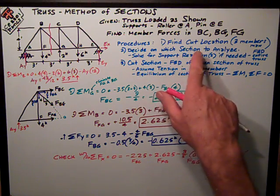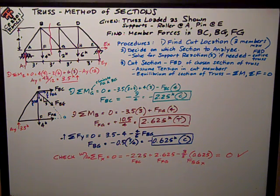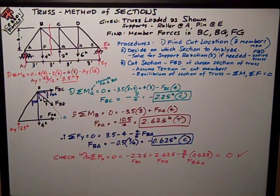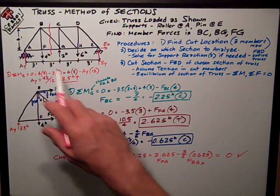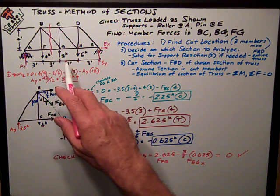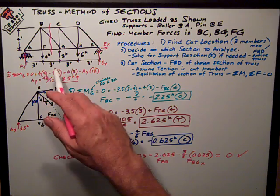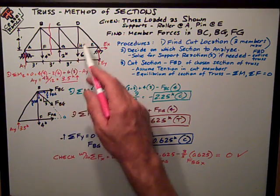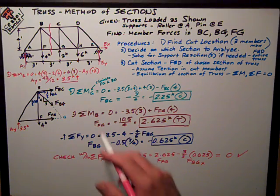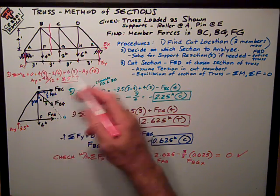The basic procedures are shown here in blue. I want to find a cut location, which we just did, decide on which section to analyze. You can analyze either section because everything's in equilibrium. The whole truss is kept in equilibrium by the supports. If you cut a section there, one side of the truss is in equilibrium. The other side of the truss is in equilibrium. Every joint is in equilibrium. Every member is in equilibrium. The whole thing's in equilibrium.